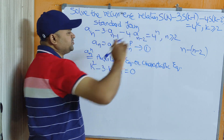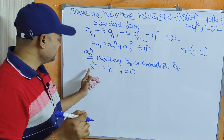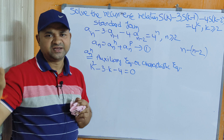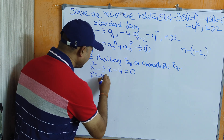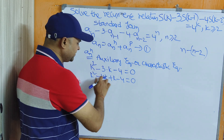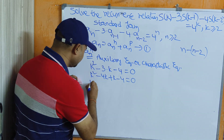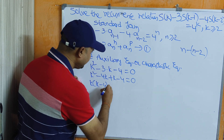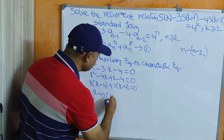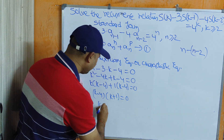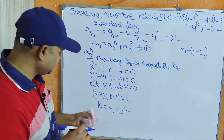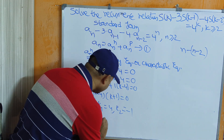For the homogeneous part we substitute 0 on the right-hand side. Factoring k² - 3k - 4 = 0: we split -3k as -4k + k, giving k² - 4k + k - 4 = 0. Taking k common from the first two terms and 1 common from the last two: (k - 4)(k + 1) = 0. So k₁ = 4 and k₂ = -1. The roots are real and different.